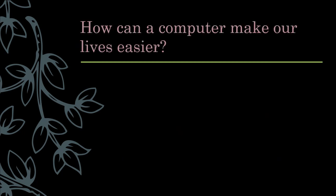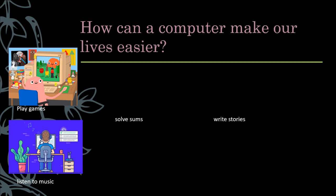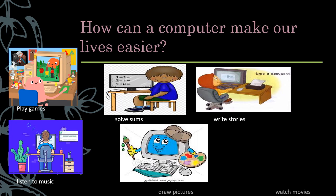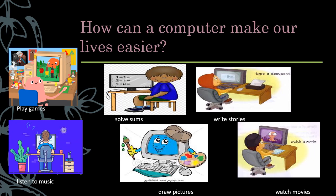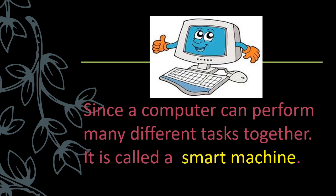How can a computer make our lives easier? We can do so many things on a computer. Like we can play games, listen to music, solve sums, write stories, draw pictures, and watch movies on a computer. Since a computer can perform many different tasks together, it is called a smart machine.